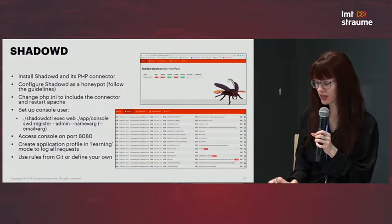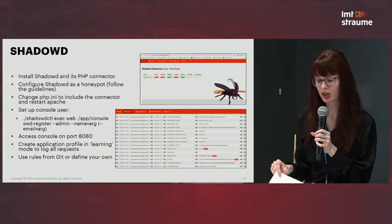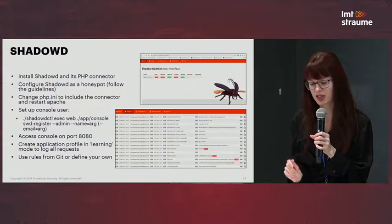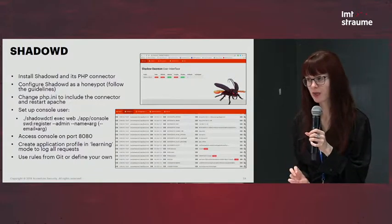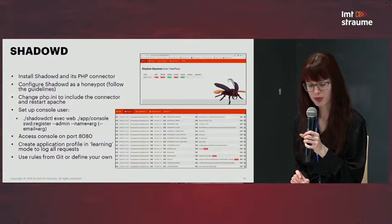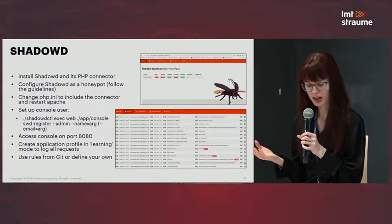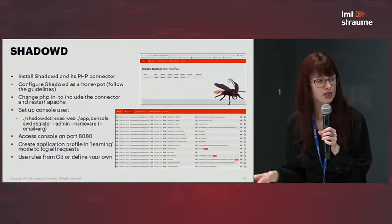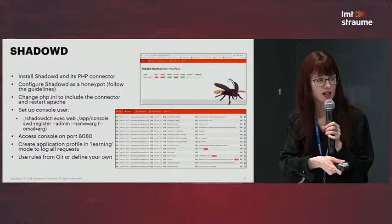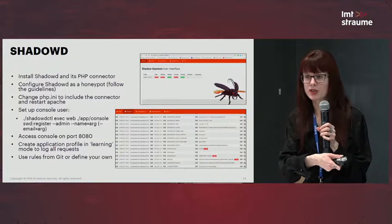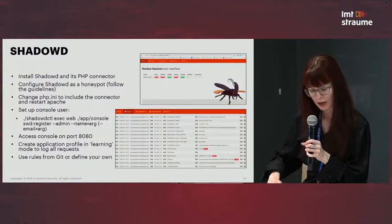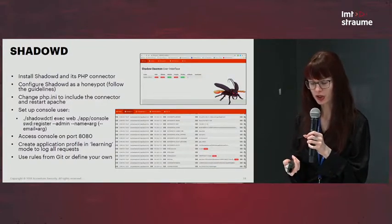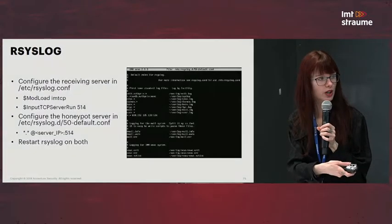ShadowD is basically a web application firewall, but you can put it in learning mode and otherwise configure it to run as a honeypot. I've set it up to monitor my own deployed web app, and since it's in PHP, I use the PHP connector. Basically I can look at all of the requests that go against my web firewall, and I've highlighted the requests with the passwords with someone trying to authenticate. There are also a lot of rules on Git that you can download, or you can write your own if you're very good with regex.